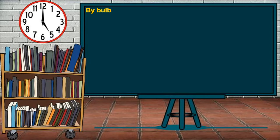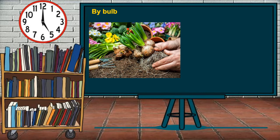Another natural method is by bulb — a short underground stem with thick fleshy leaves. A new plant develops from the bulb, and the fleshy leaves contain stored food which supplies nourishment for the growing bulb. An example is onions.